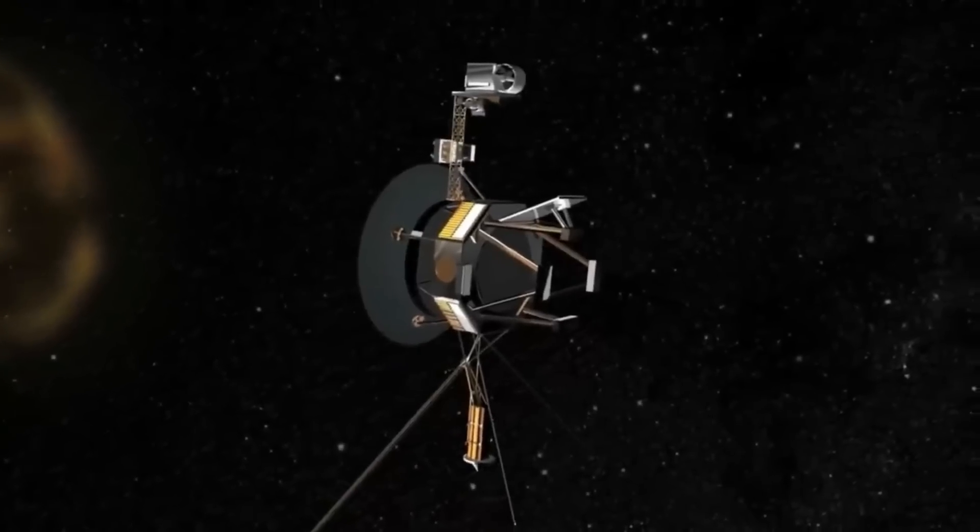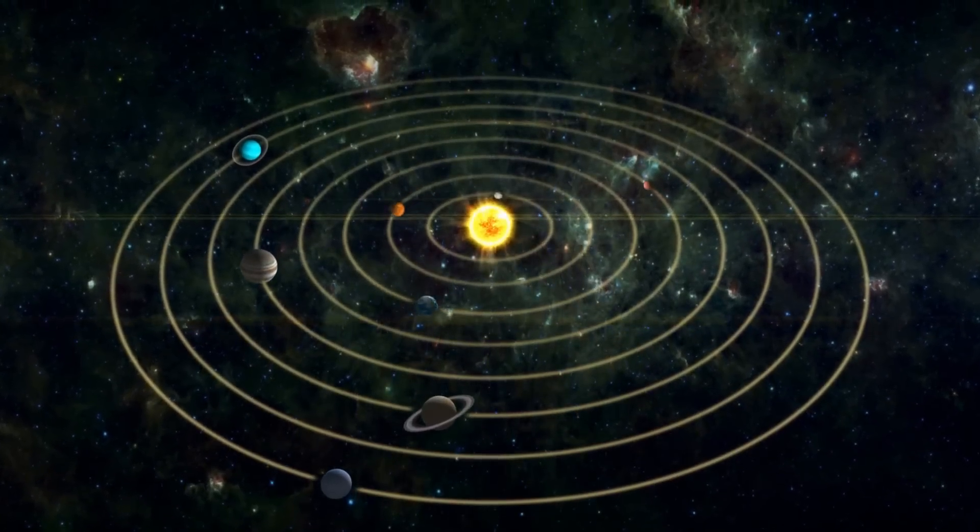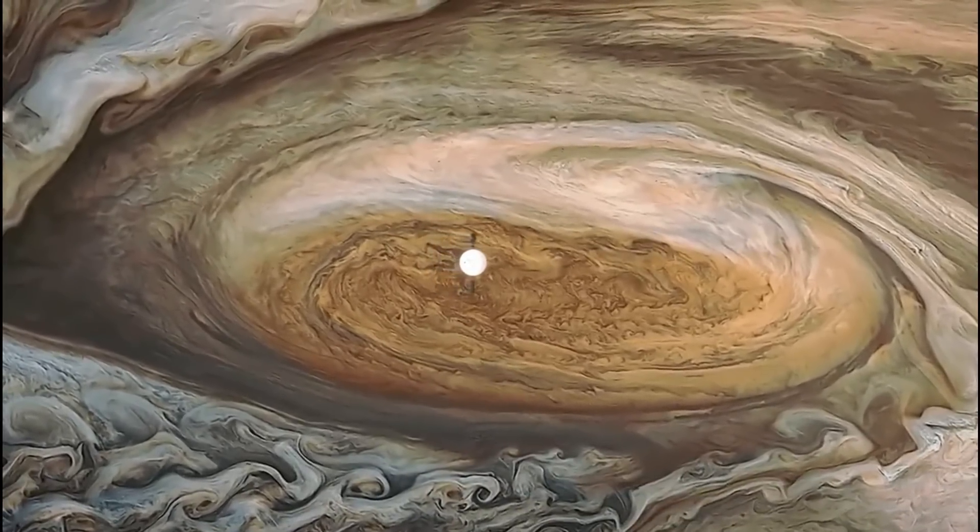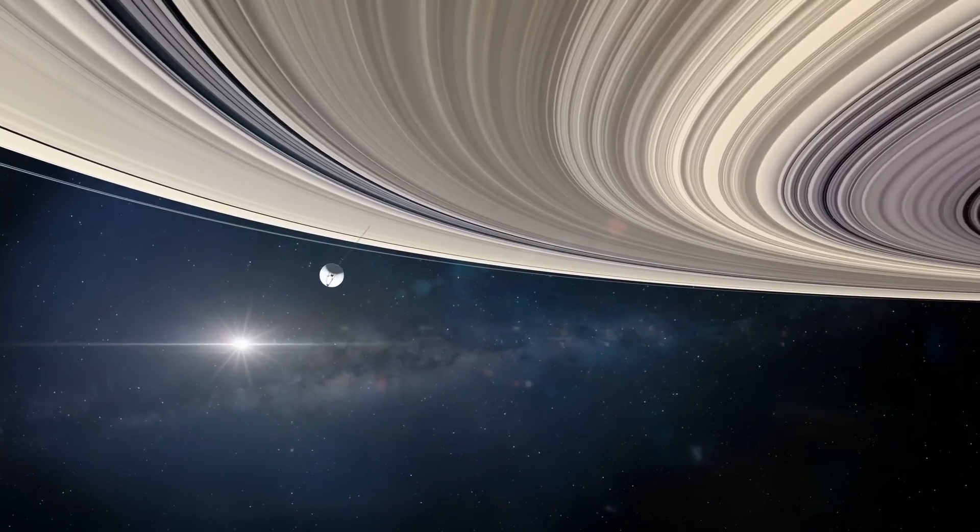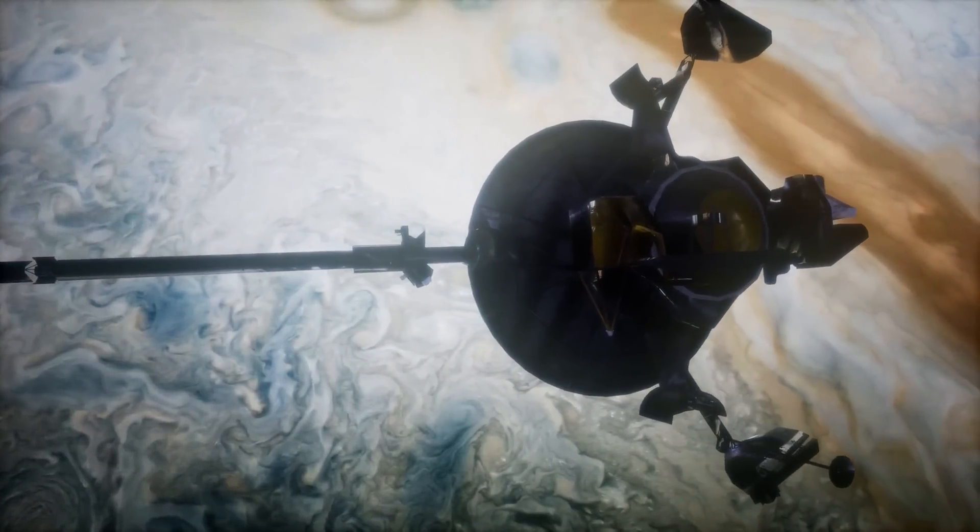The Voyager 1 and Voyager 2 probes were both made so that scientists could learn more about the furthest parts of the solar system. Voyager 2 was sent to find out more about Jupiter, Saturn, Uranus, and Neptune. In the same way as its predecessor, Voyager 2 set out to find and study the most distant parts of our solar system.